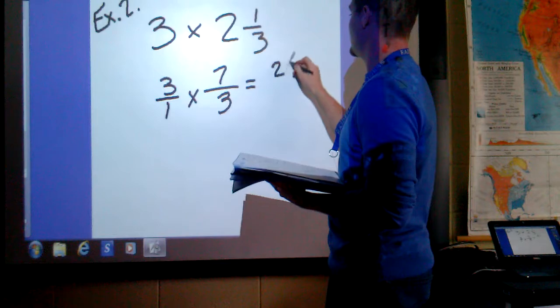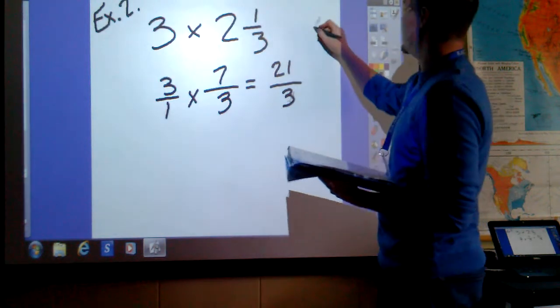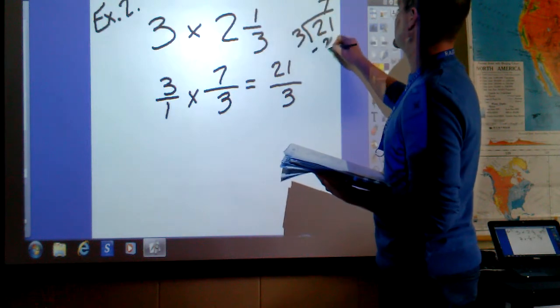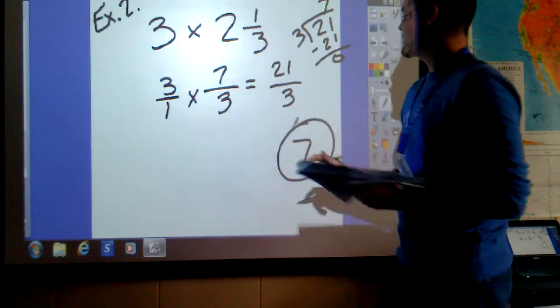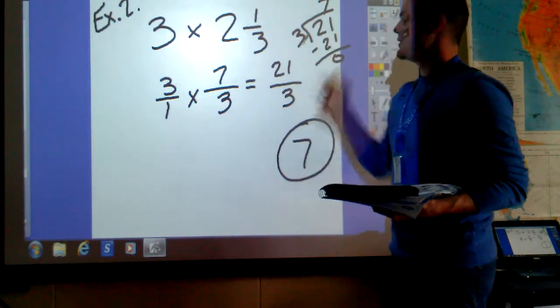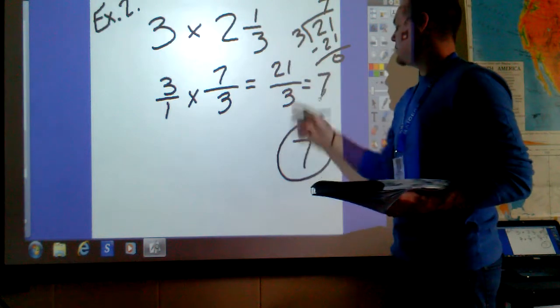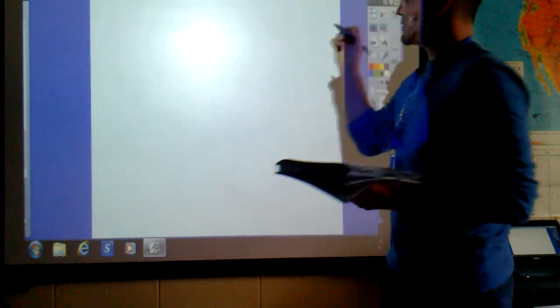3 times 7 is 21. 1 times 3 is 3. Now you can take and write out 21 divided by 3. 7 times 3 is 21. No remainder. So our answer is 7. 21 divided by 3 is 7. And if you know this off the top of your heads, feel free to just write 21 thirds is equal to 7. And that was example 2.